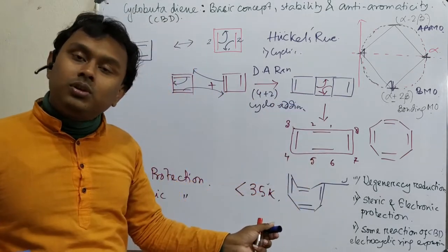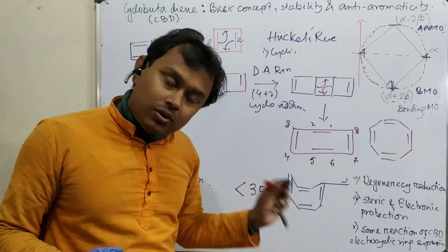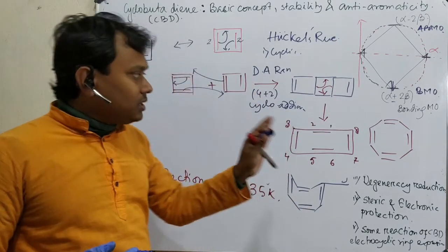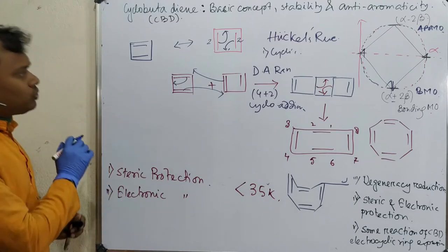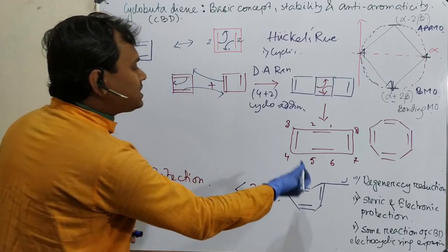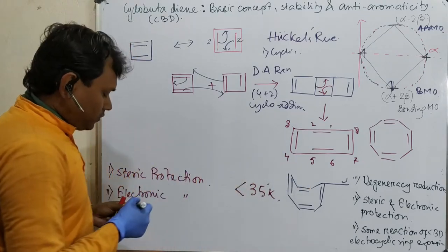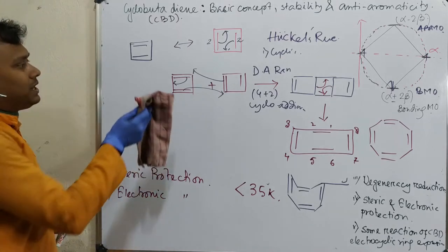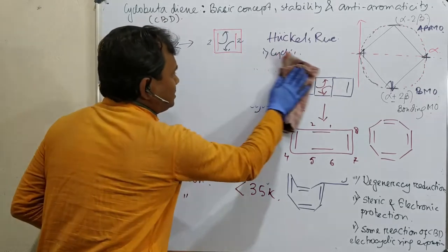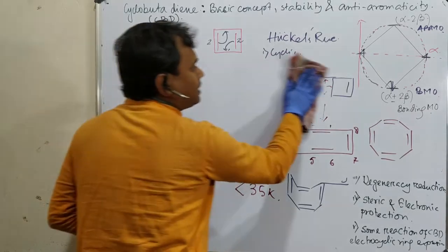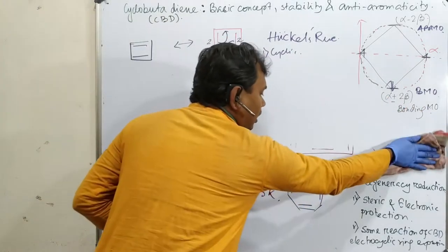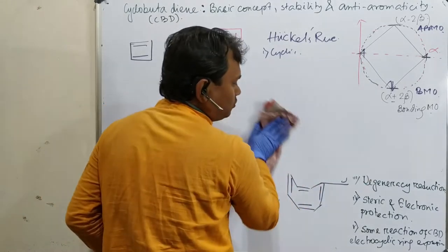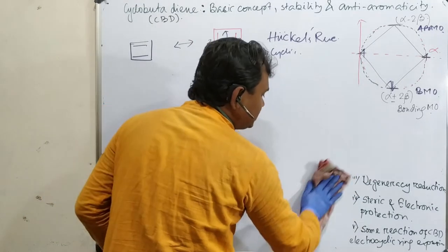That is the reason for its stability. So the parent cyclobutadiene molecule is stabilized through this pathway. Now let's continue the degeneracy reduction part. You have learned that cyclobutadiene undergoes dimerization, and in order to get stabilization it undergoes degeneracy reduction.